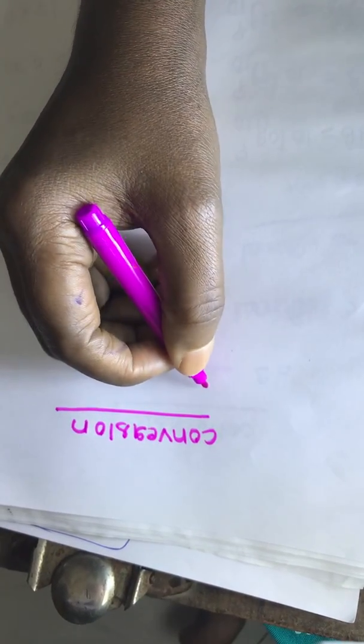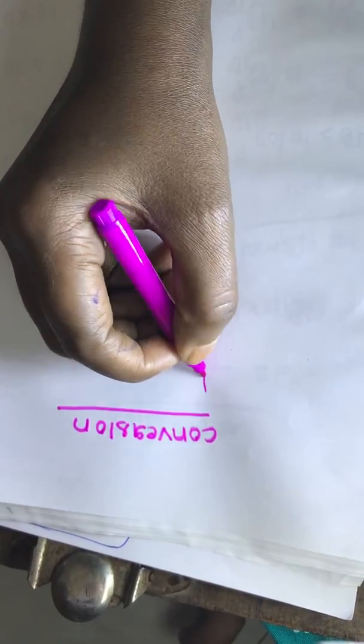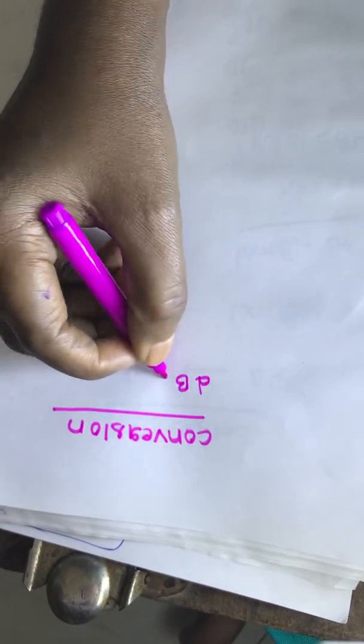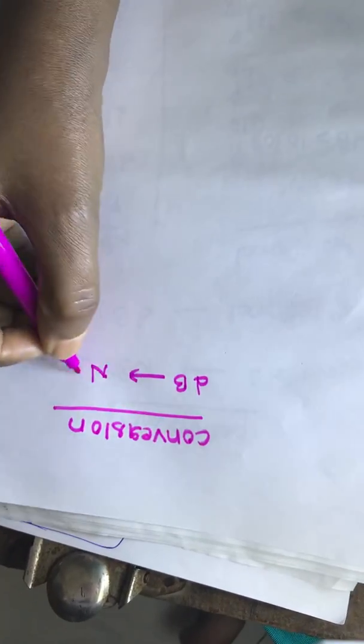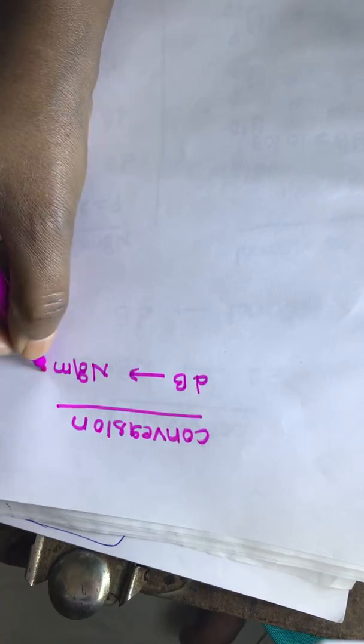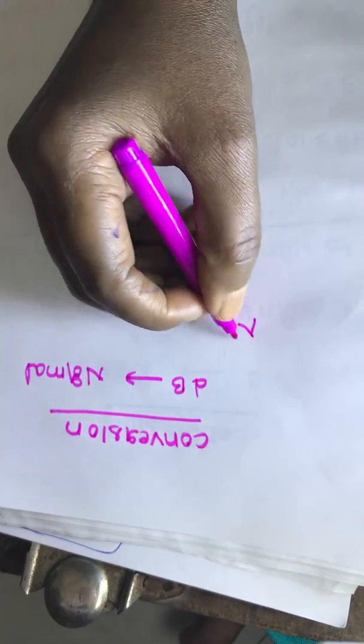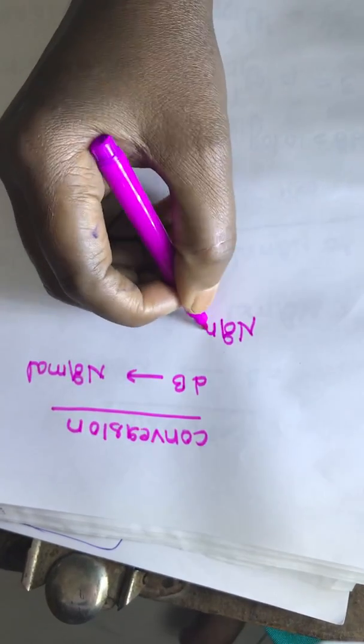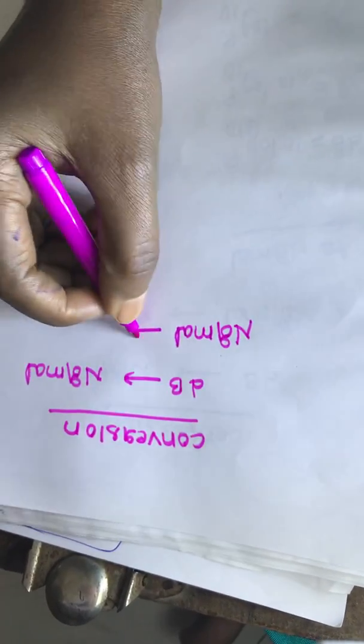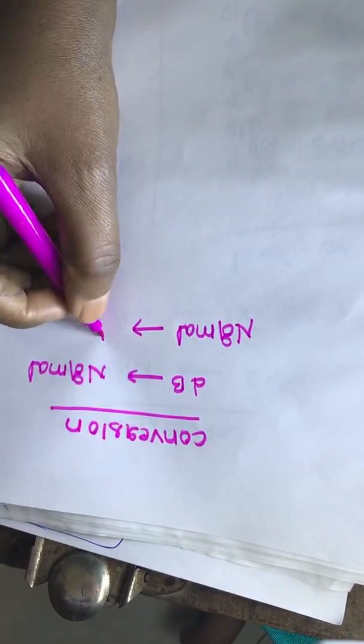If they gave in dB we will convert it into normal. And suppose if they gave the value in normal, how to convert it into dB.